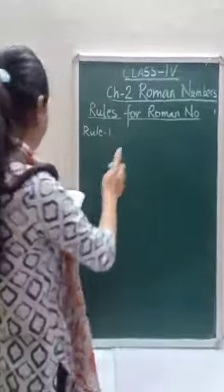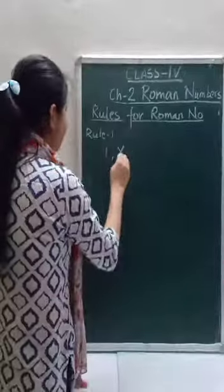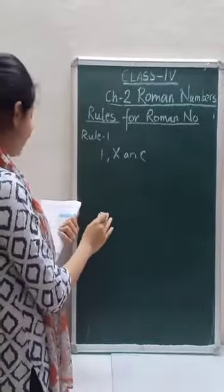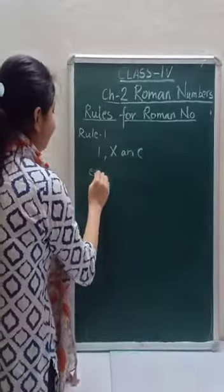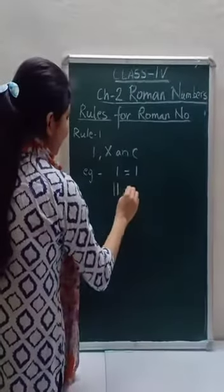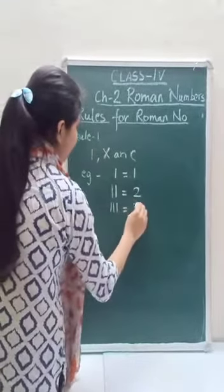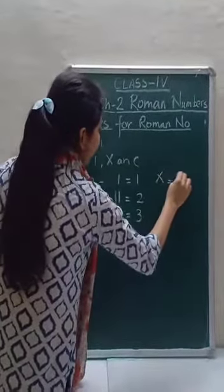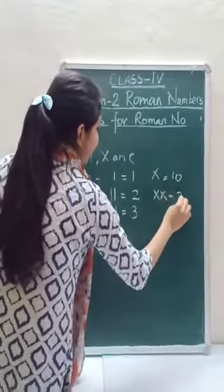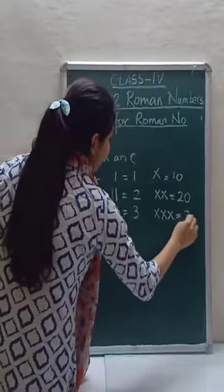Rules for Roman Numbers. Rule number 1 is the Roman numbers I, X, and C can be repeated up to 3 times in succession to form a number. For example, I is equal to 1, II means 2, III means 3. Similarly, X is 10, XX is 20, and XXX is 30.